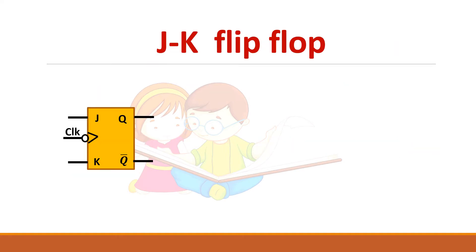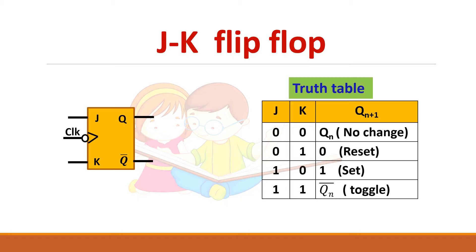First we should know about the truth table of the flip-flop with which we are going to design the counter. Always remember: when J and K are both 1, the output will toggle in a JK flip-flop. Only this property we are going to use to design the counter.